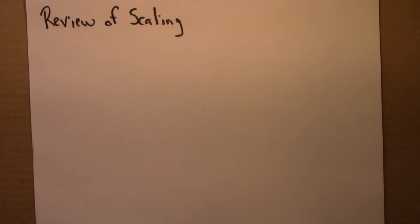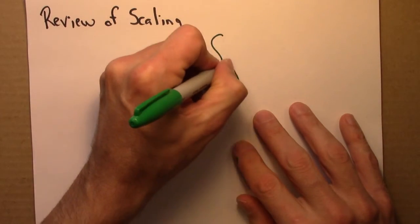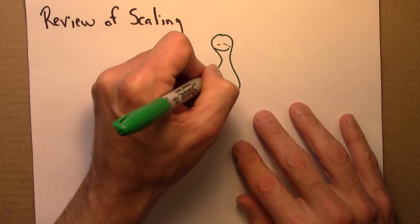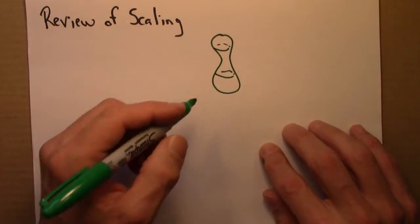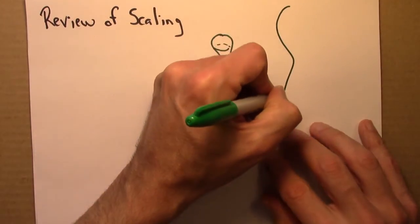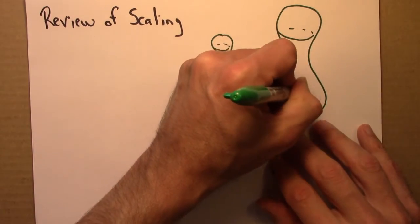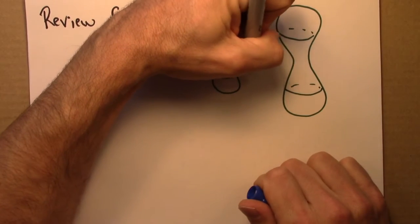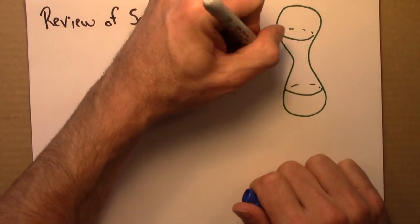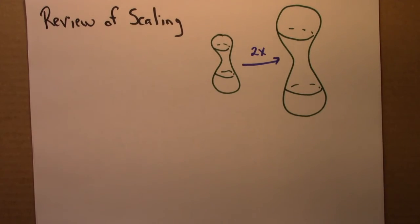So for an example, suppose we have some shape, some three dimensional blob thing. And then if I were to scale this up, the idea is that the picture on the right is the same as on the left, it's just two times larger. Obviously this is not a perfect drawing, but that's just sort of the idea.